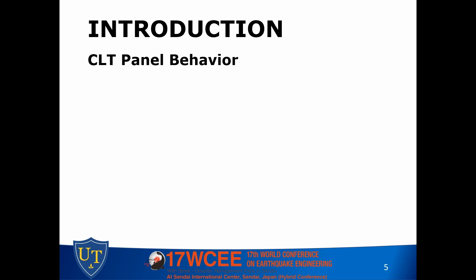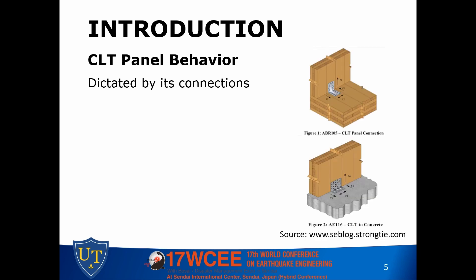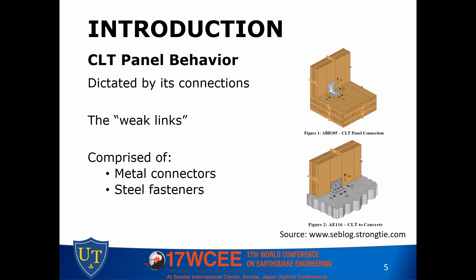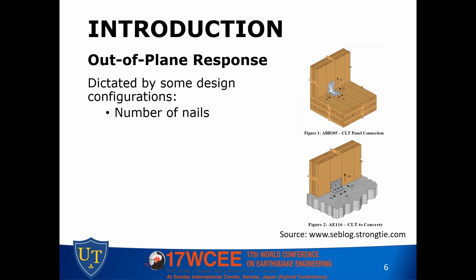The overall structural response of CLT buildings, learned from seismic experience, is dictated by its panels, which are then dictated by its connections. Those are the weak links of CLT buildings — they concentrate most of the ductility when load is imposed. Connections are mainly comprised of metal connectors such as brackets, steel fasteners such as bolts, screws, and sometimes nails, and also the interaction between these fasteners and the wood panel. Design configurations such as the number of nails, wood species, and their interaction with fasteners all influence the connection response.